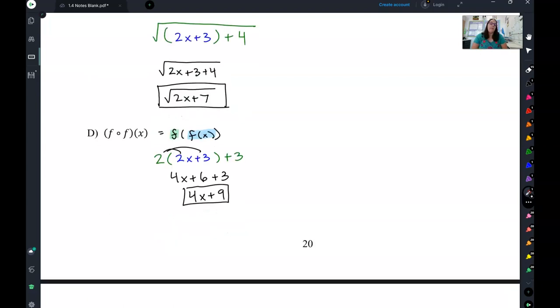Here we have f of f of x, where f is 2x plus 3. So, two big fat parentheses plus 3. But, I'm also plugging that same equation inside it, 2x plus 3. So, then I distribute and simplify to get 4x plus 9.